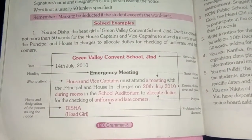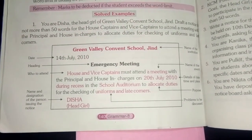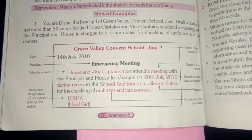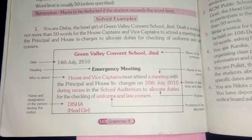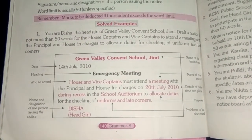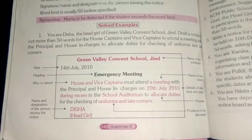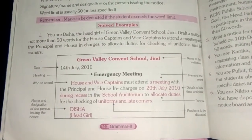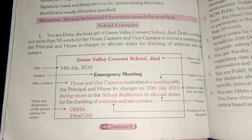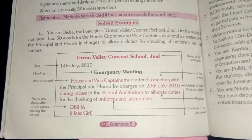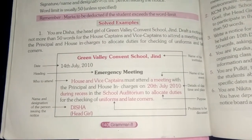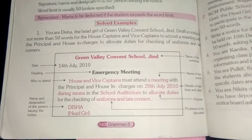Now let's see how you will write this question as a notice. First, consider the box or rectangle you see — treat it as your page. The main heading, i.e., the name of the organization from which the notice is being issued, will come here. So the school's name will appear at the top. This is the first heading: name of the institution.